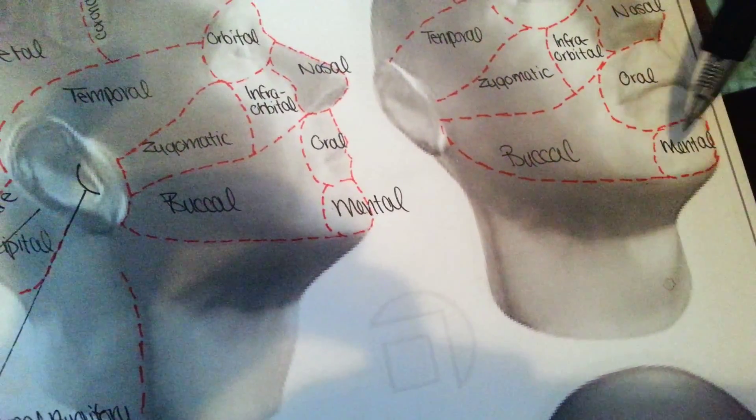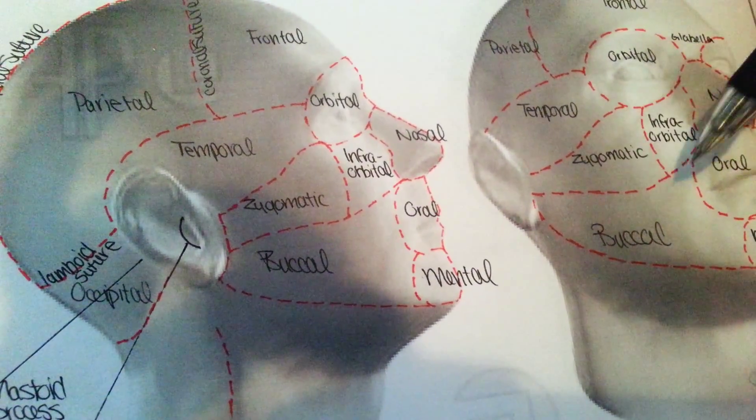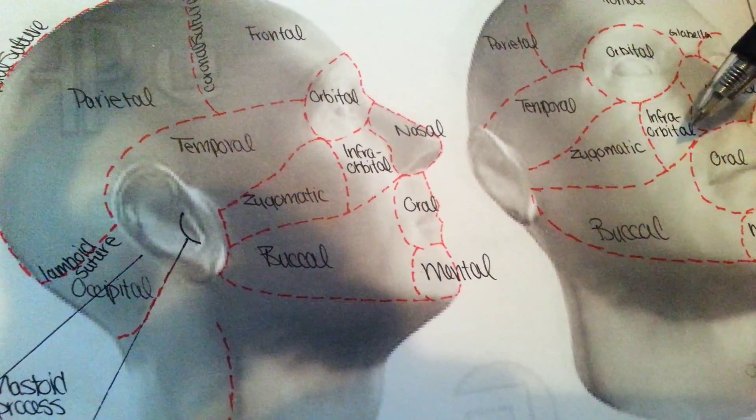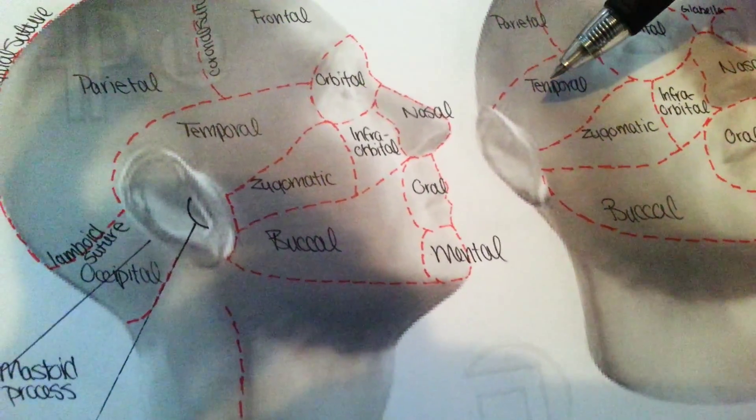Oral, mouth area, mental chin. Infraorbital is the front of the cheekbones, almost. You see under the orbital region here, between the nasal and the zygomatic or cheekbone area.